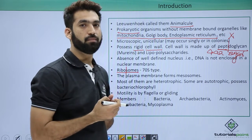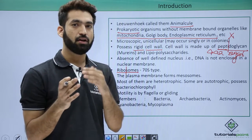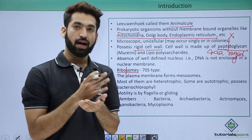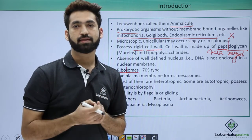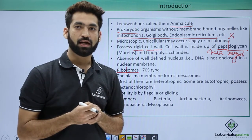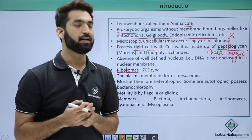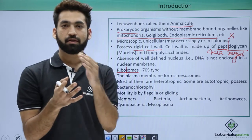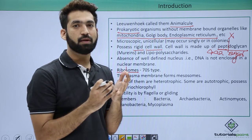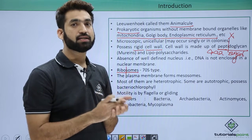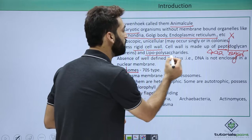Peptidoglycan has another name called murein, and it is a long chain heteropolysaccharide — 'hetero' means it is made up of more than one monomer. The monomers are called NAG and NAM. NAG stands for N-acetyl glucosamine and NAM stands for N-acetyl muramic acid. Continuous chains between NAG and NAM form peptidoglycans. When you give a patient penicillin, it exactly breaks the bond between NAG and NAM, which is how we get rid of bacterial infection.